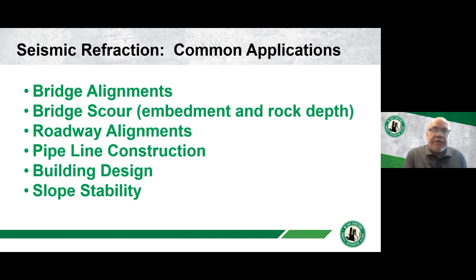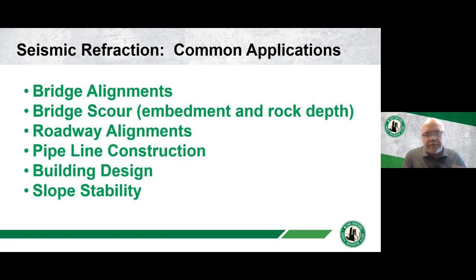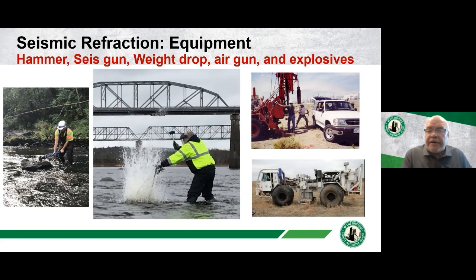Some applications include bridge alignments early on, before the final alignment of a bridge crossing is finalized — determining where deeper or shallower rock elevations are and whether they're competent enough to support pier and span loads. Bridge scour is another major application — determining the embedment of bridge supports into the riverbed and how shallow the rock depth is. Other applications include roadway alignments, pipe construction where you just want to know you won't hit rock, initial building design, and slope stability — all very, very valuable uses for seismic refraction data.